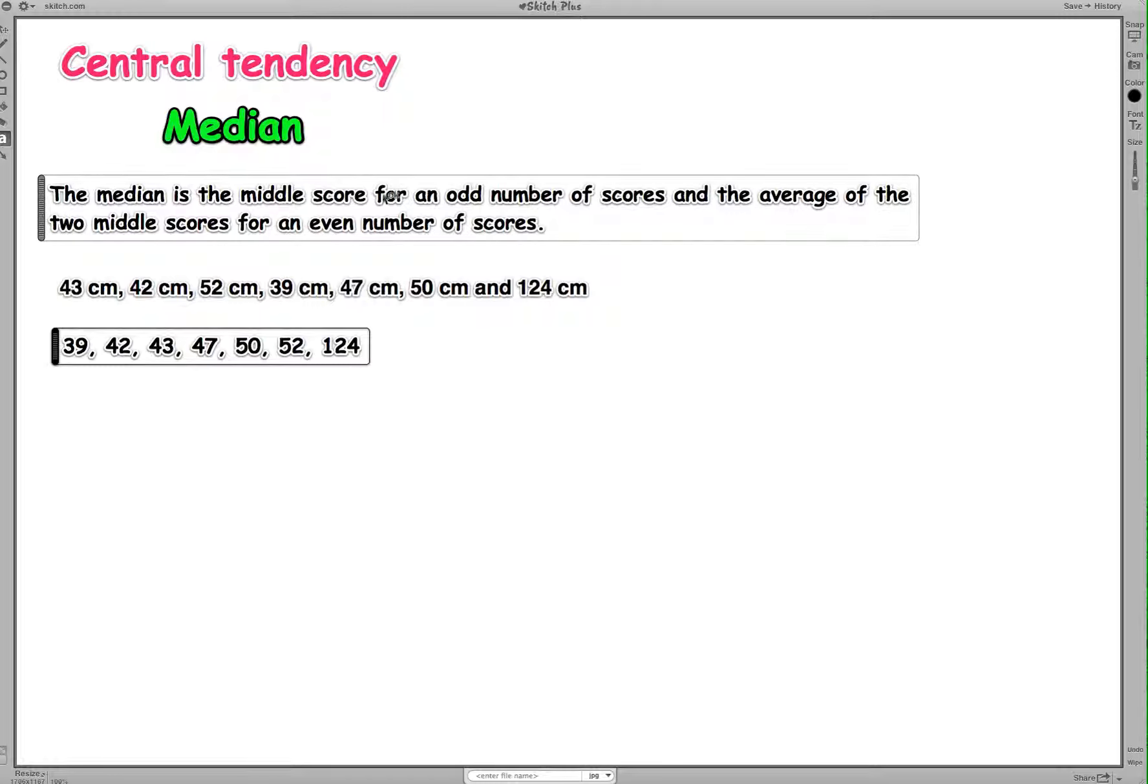So up here it says the median is the middle score for an odd number of scores and the average of the two middle scores for an even number of scores. Now we've got an odd number of scores here. So all we do to find the median is really simple. We simply, going to change the pen size here so that it's a bit easier to understand. Okay, so we want to find the middle score. So we've got 1, 2, 3, 4, 5, 6, 7. So the middle score is going to be 47 here because it has 1, 2, 3 below and 1, 2, 3 above. So the median of this set of scores equals 47 centimeters.